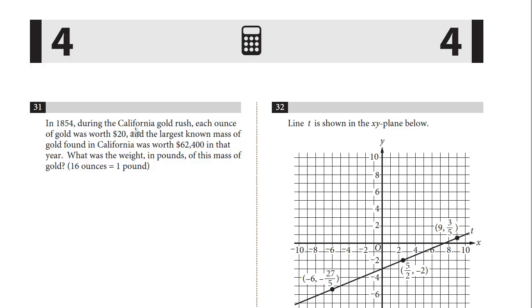In 1854, during the California Gold Rush, each ounce of gold was worth $20, and the largest known mass of gold found in California was worth $62,400 in that year. What was the weight in pounds of this mass of gold? 16 ounces equals one pound.